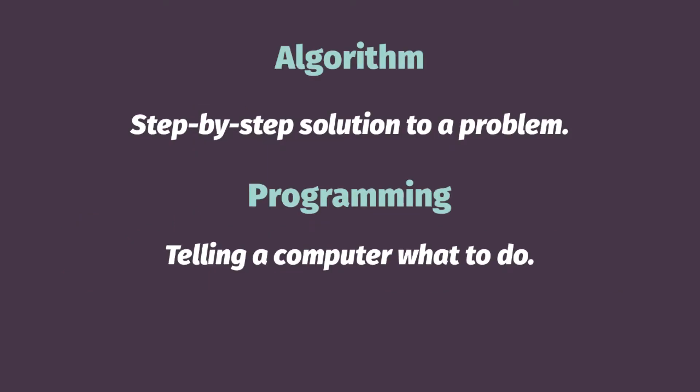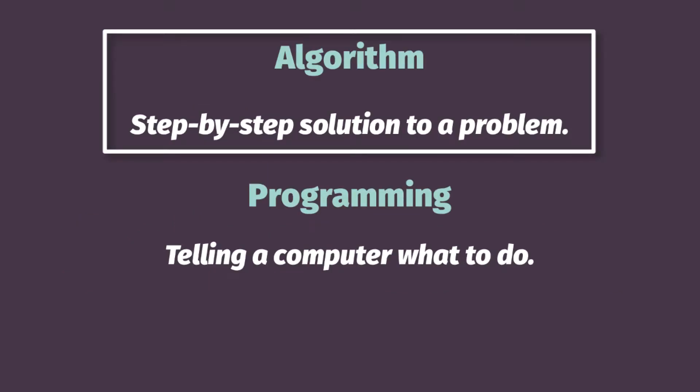The first term to discuss is algorithm. An algorithm is a step-by-step solution to a problem. You've already seen algorithms in your life. A great example is if you've ever cooked something from a recipe. A recipe lays out a step-by-step process by which you combine ingredients and produce something that's hopefully delicious at the other end. Our goal this semester is to work and focus on defining step-by-step solutions to problems that we can utilize computational processes to create.